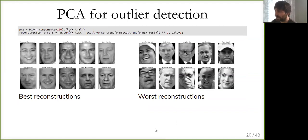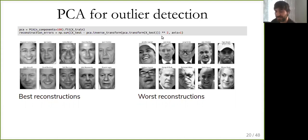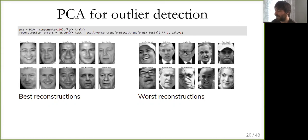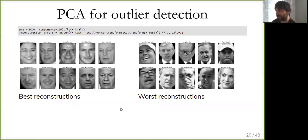You can also do PCA for outlier detection by looking at which samples are reconstructed worst. In this dataset, some faces are reconstructed well and others are not. The poorly reconstructed ones mostly have alignment issues — people with glasses, hats, unusual crops. Whereas faces that are really aligned are reconstructed well.